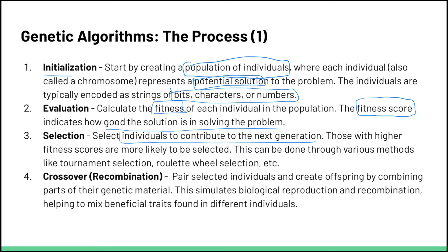Next, we select individuals that we want to breed together to contribute to the next generation. If we compare this to actual human beings, this would be like eugenics — taking people with the best traits, the best muscular structure, the most intelligent, and breeding them together until we end up with another generation. That same concept applies here: those with higher fitness scores are going to be selected to produce the next generation. There are various methodologies by which we select fit individuals.